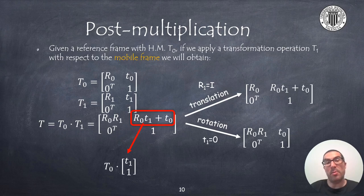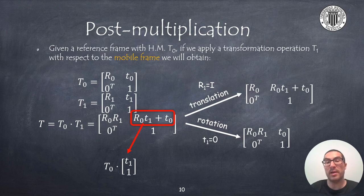Similarly, but in the opposite way, we can obtain a generic transformation as a result of applying a post-multiplication. Again, the resulting rotation submatrix is the multiplication in the proper order of rotation submatrices, while the new translation term will depend on transformation T0 as a result of multiplying T0 with the homogeneous point T1,1. Again, the expressions can be simplified if we only apply a translation or a rotation.